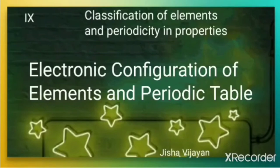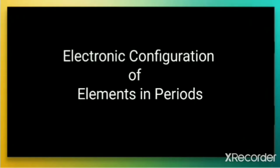Hello students, let us discuss the electronic configuration of elements and the periodic table. In the preceding unit we learned that the distribution of electrons into orbitals of an atom is called electronic configuration. In this video we will observe a direct connection between the electronic configuration of elements and the long form of the periodic table.